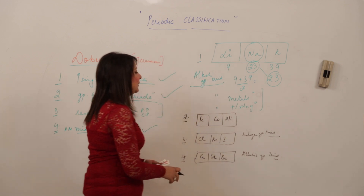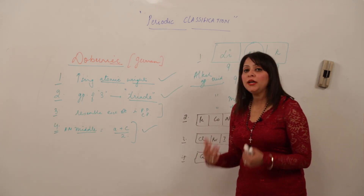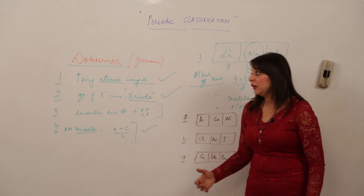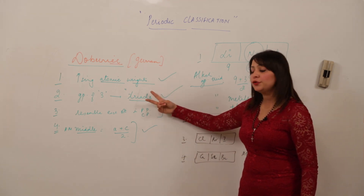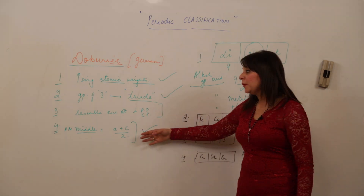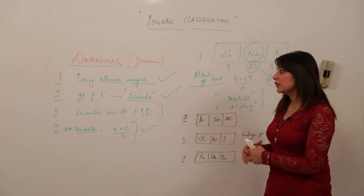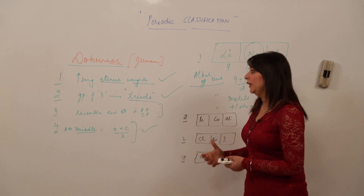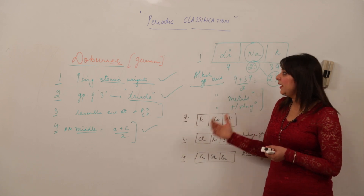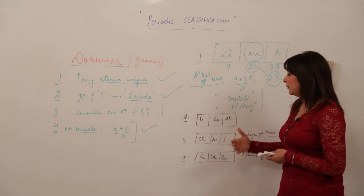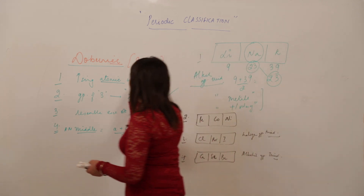Döbereiner was able to make only four or five triads, but his classification ultimately failed because he was unable to make more triads fulfilling all four criteria — increasing atomic weight, group of three, resemblance in properties, and arithmetic mean of atomic masses. Some elements fulfilled one or two criteria but lacked the others. Still, he made a big contribution by at least trying.